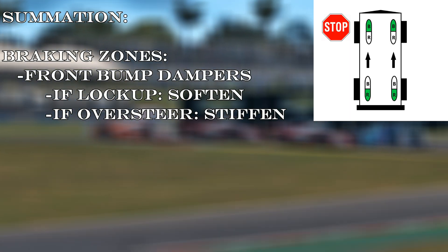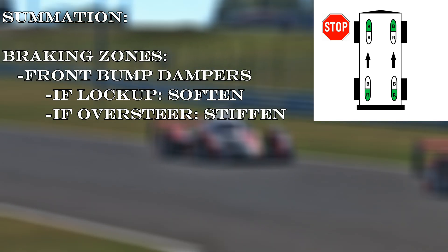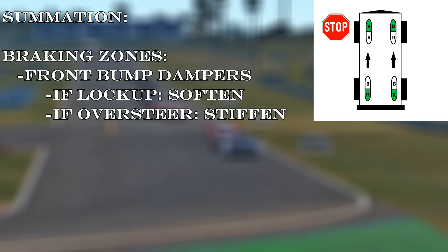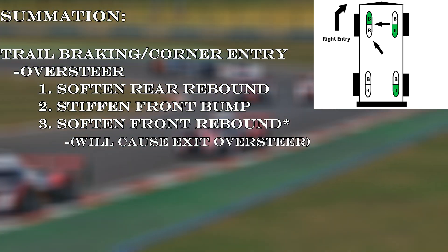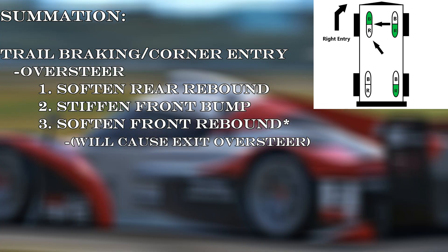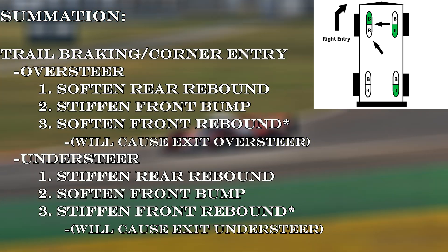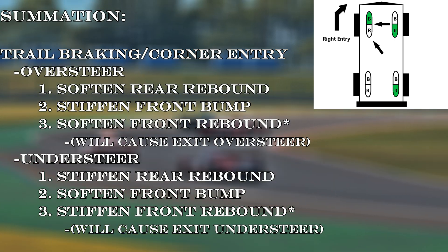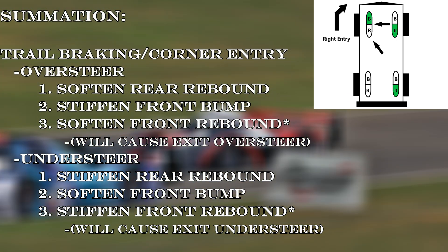By way of summary, here are recommendations on a situational basis with a prioritized list of adjustments — keep in mind these are symmetrical. For initial braking: adjust front bump dampers — if locking up, try softening them; if you have a twitchy rear end on braking, try stiffening them. For trail braking and initial cornering with oversteer tendency: soften the rear rebound dampers, then stiffen the front bump dampers; the last thing to do is soften the front rebound dampers, but be careful as this causes oversteer on exit. For understeer on trail braking and corner entry: stiffening the rear rebound dampers is the number one choice, then soften the front bump dampers; finally you could stiffen the front rebound dampers, but again this causes understeer on exit.